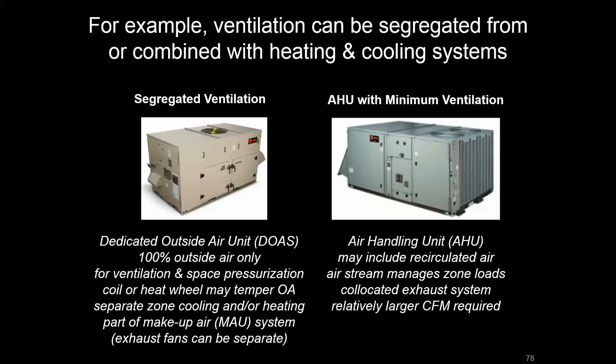These units look very similar, but on the left we have a unit that's part of a dedicated outside air system, or a DOAS. This is where we have 100% outside air being brought in at low volume, possibly tempered with a coil or with something like a heat or enthalpy wheel, and that's being brought to the zone specifically for ventilation. With an air handler system, we'd have the HVAC loads being picked up by that unit, whereas in the DOAS there's a completely separate HVAC system at or near the zones to handle those loads.